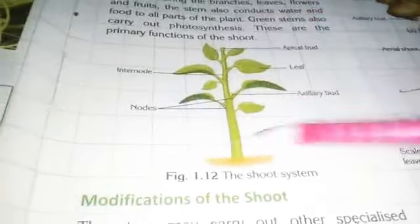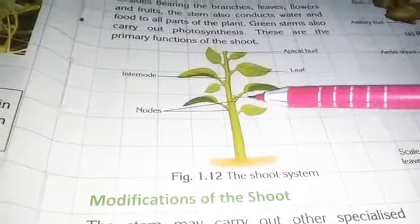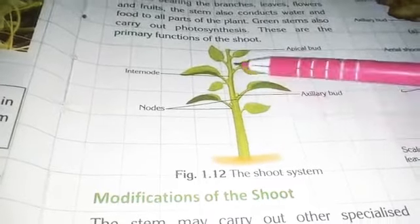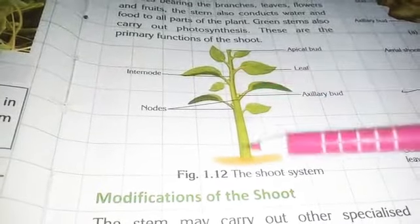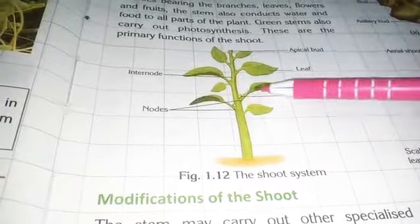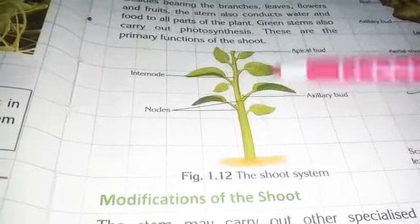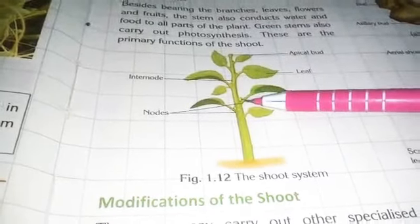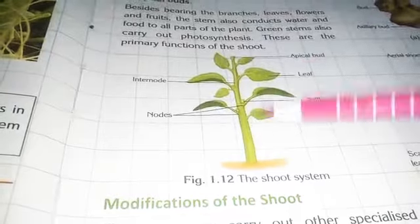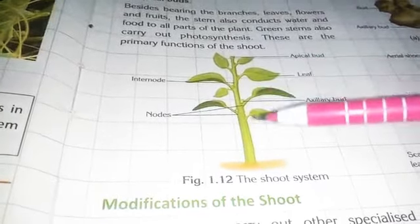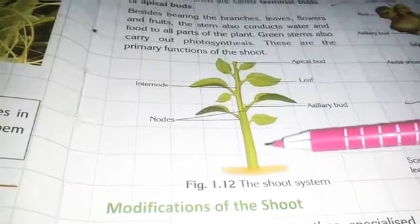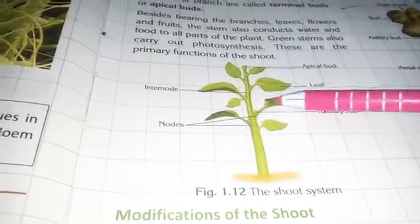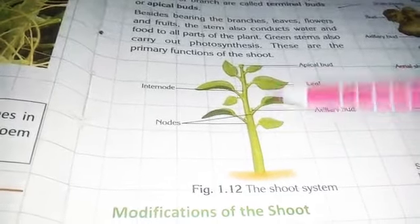There are many parts present in the shoot system: stem, branches, leaves, fruits, and flowers are all there. All these things are present in the shoot system because it is the aerial part of the plant — aerial meaning it is present in air, above the soil surface. Flowers, fruits, branches, leaves, and stem all grow on the shoot system.